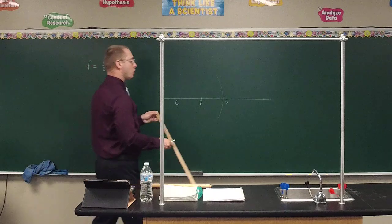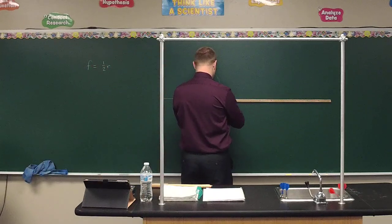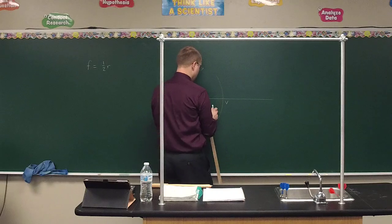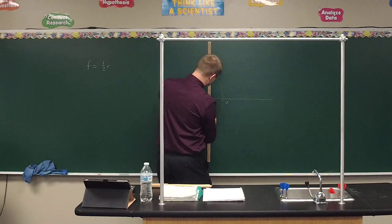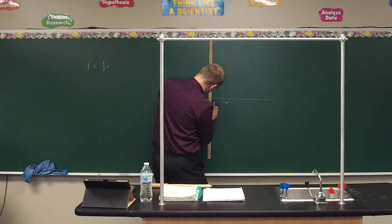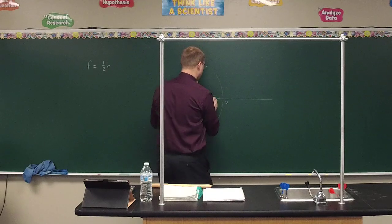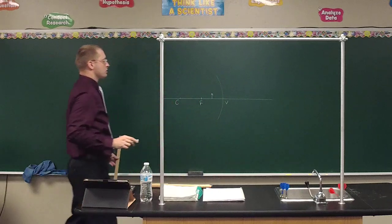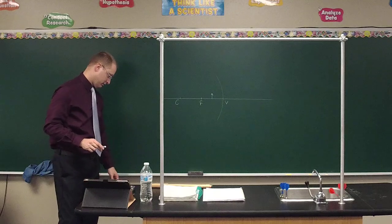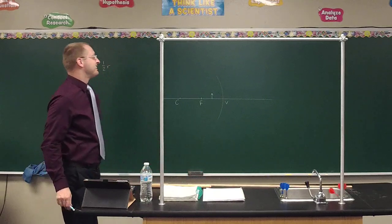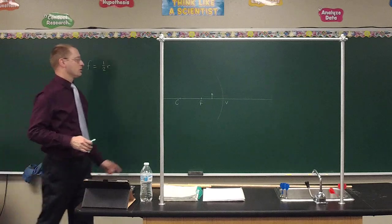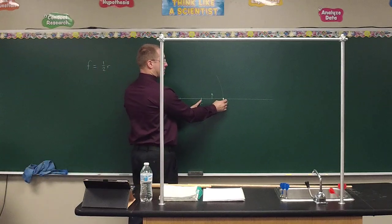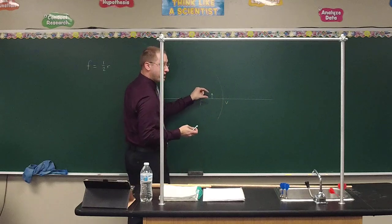The object is only three centimeters from the mirror, and it's just one and a half centimeters tall. So we have a 12-centimeter radius, 6-centimeter focal length, 3-centimeter distance to object, which is only one and a half centimeters tall. Any questions on the setup?